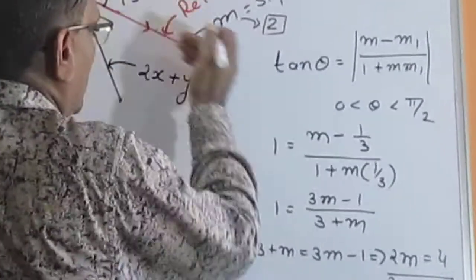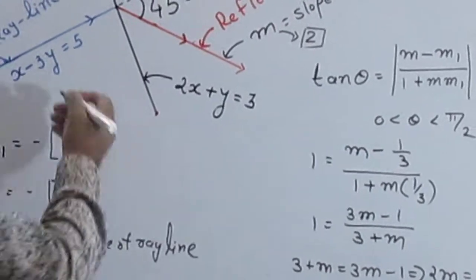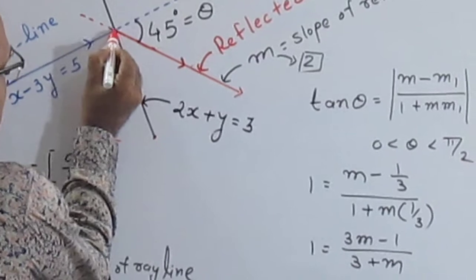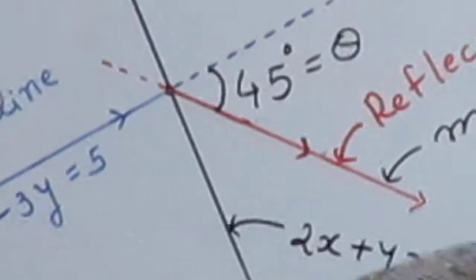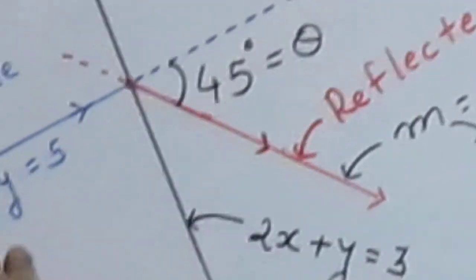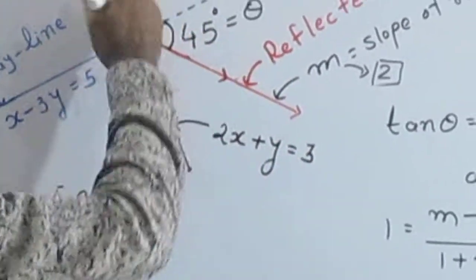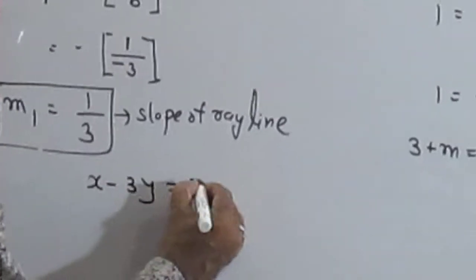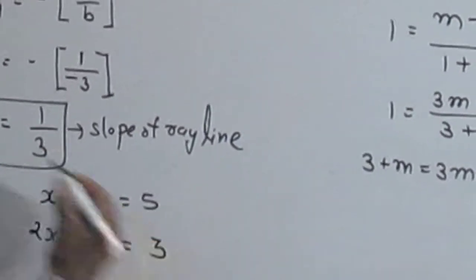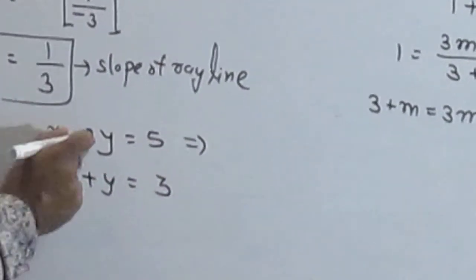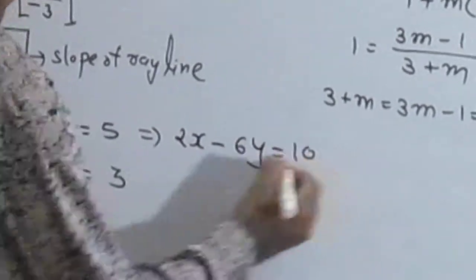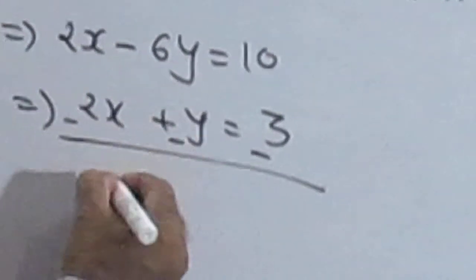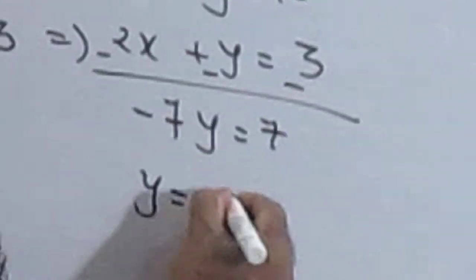Now we have the slope of the reflected line. We also require the point x1, y1. The ray line and reflected ray intersect each other — this is the intersection point. This is the ray line equation and this is the glass line equation, and they intersect here. So we find the intersection point. x minus 3y equals 5 and 2x plus y equals 3. Using the elimination method, we multiply by 2: 2x minus 6y equals 10 and 2x plus y equals 3. By elimination, we get minus 7y equals 7, so y equals minus 1.